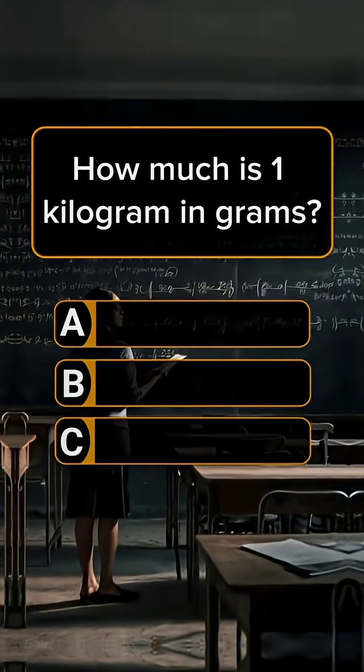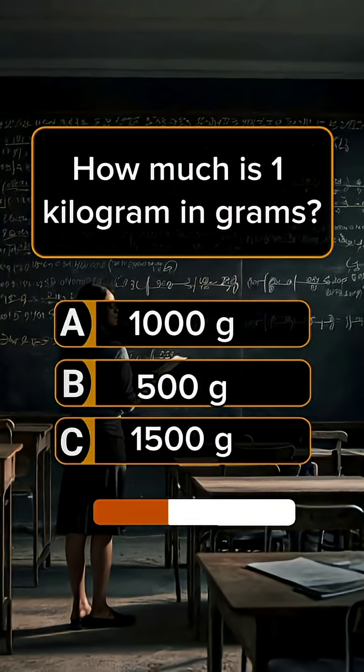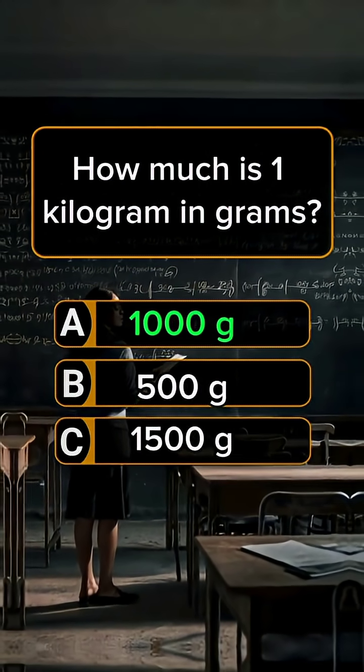Question 4. How much is 1 kilogram in grams? Answer A, 1,000 grams.